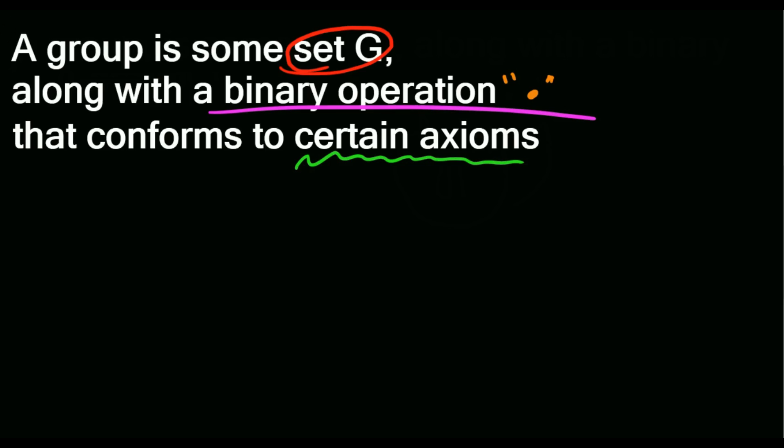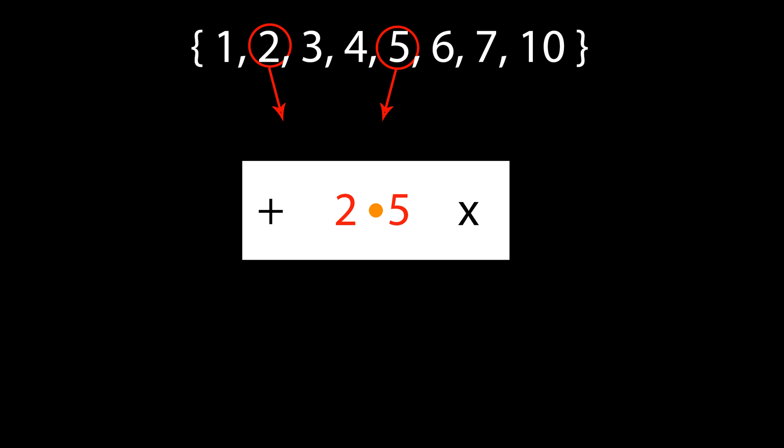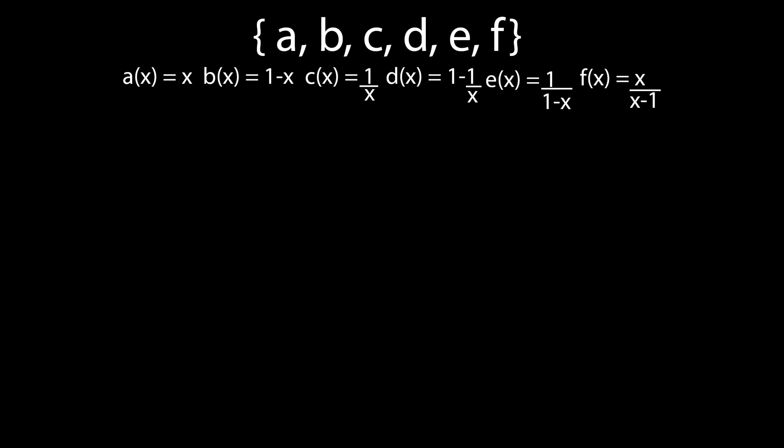Going back to our definition of a group, the next thing we need to understand is a binary operation. This is a little conceptual, but it's essentially just a procedure that takes two elements from a set and combines them in some well-defined way, like addition or multiplication. But in general, it can be more abstract than that.